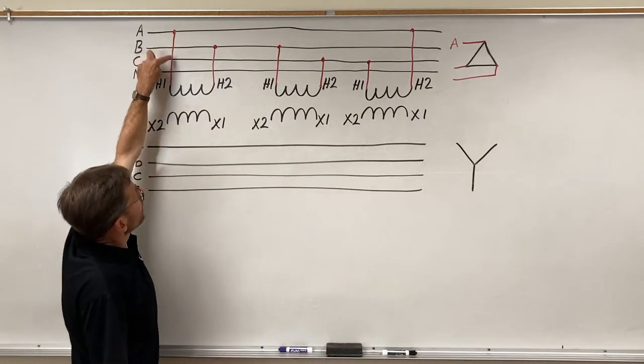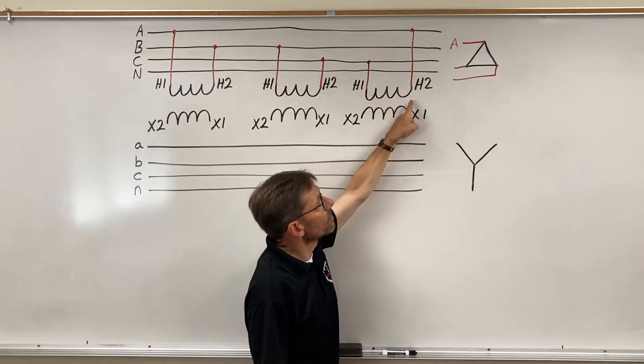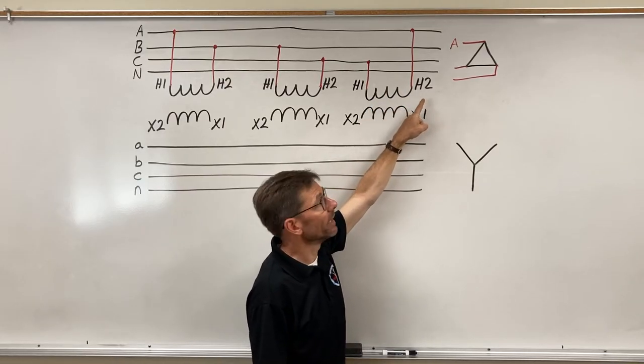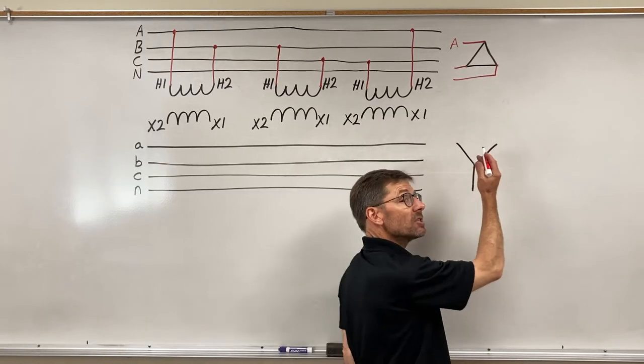Line A connects to one winding here, but it also connects to another winding—one on this side, one on this. How about B and C?